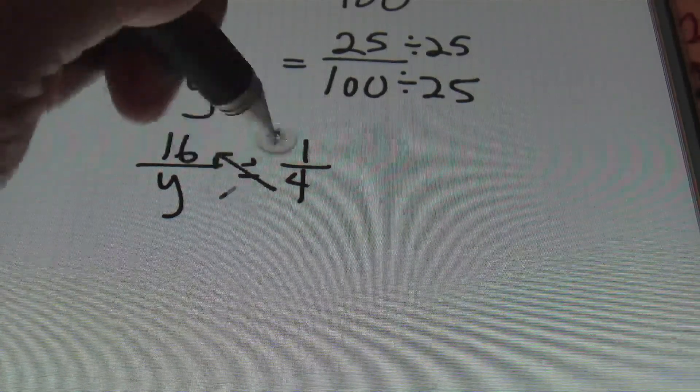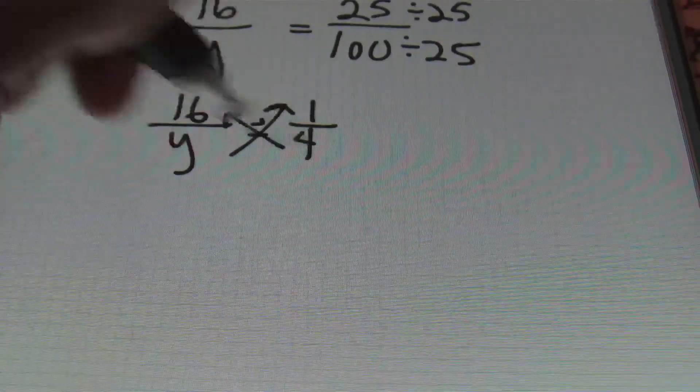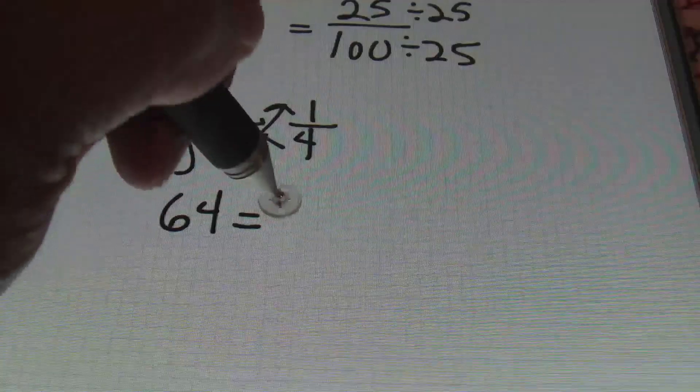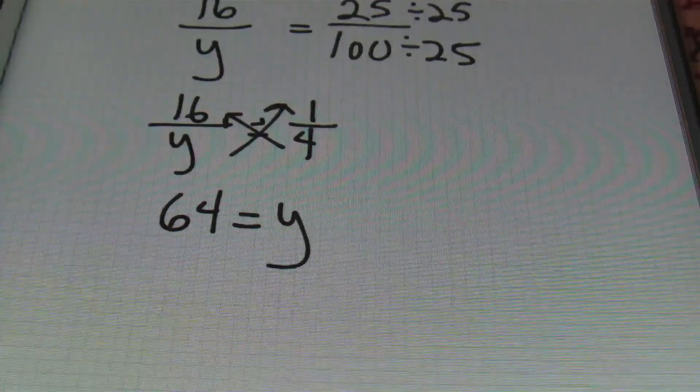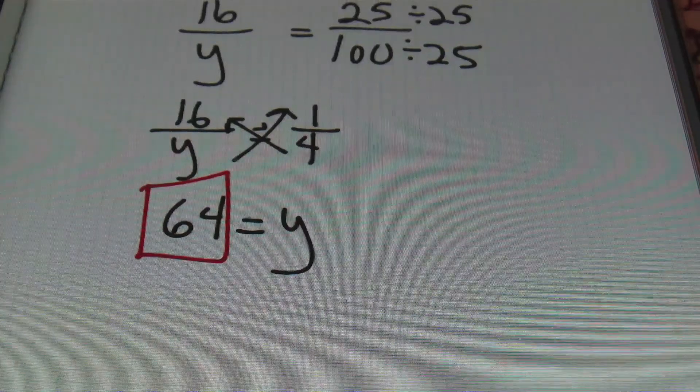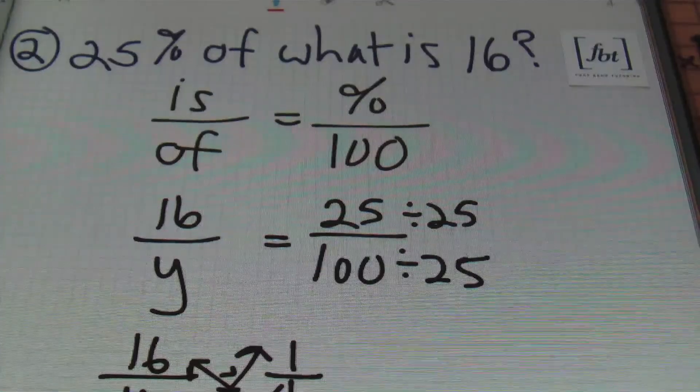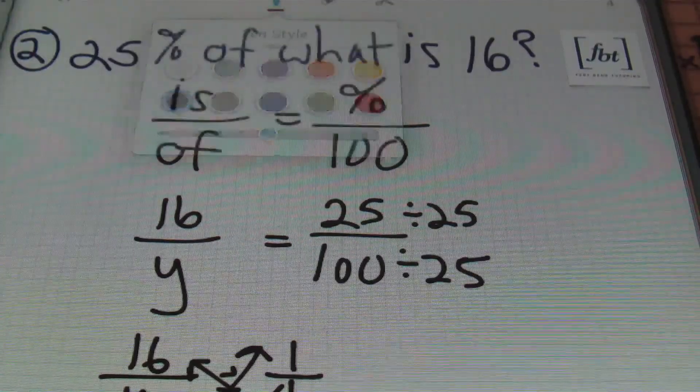And then I'm going to cross multiply because it's fun, and I get to draw arrows. Four times 16 is 64. Y times one is y. Done. That's the process, ladies and gentlemen. That was percent proportion for problem number two.